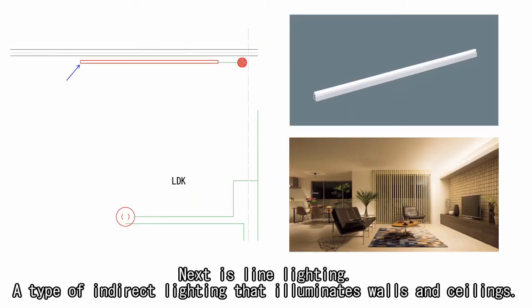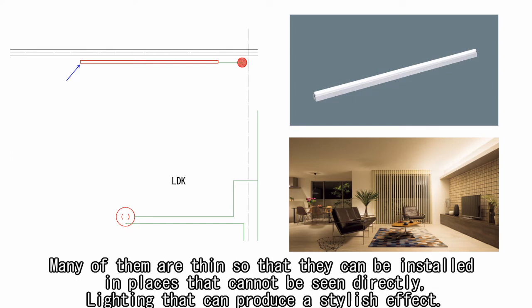Next is line lighting. A type of indirect lighting that illuminates walls and ceilings. Many of them are thin so that they can be installed in places that cannot be seen directly. Lighting that can produce a stylish effect.